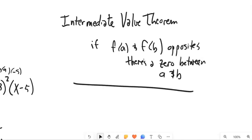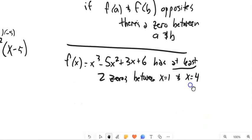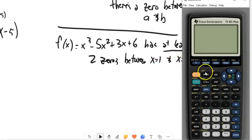So here's a claim. So that function has at least two zeros between x equals 1 and x equals 4. Well, let's check it out.